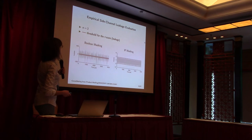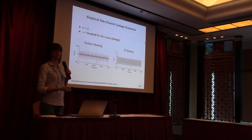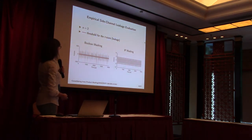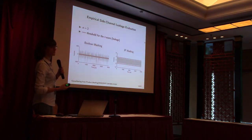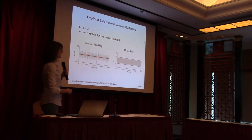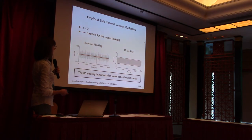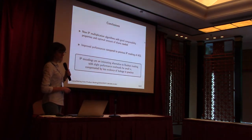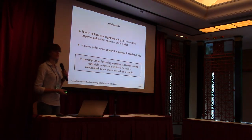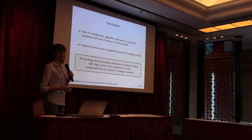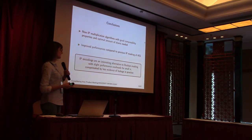For the empirical side-channel evaluation: here you can see the T-test comparison of Boolean masking and IP masking. The red line is the threshold of the T-test — when the gray lines exceed this threshold, the variable is leaking. It's evident that our IP masking shows less evidence of leakage. In conclusion, we presented a new IP multiplication scheme with good composability properties and better improved performance. IP encoding represents an interesting alternative to Boolean masking, with just a slight performance overhead for small n, compensated by less evidence of leakage in practice.